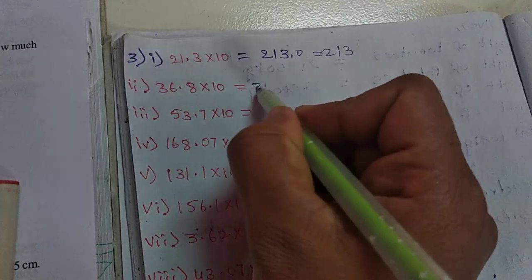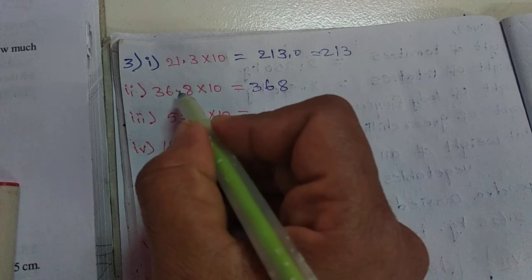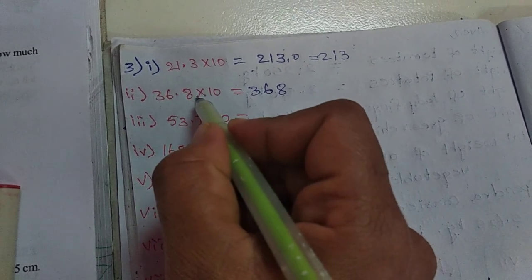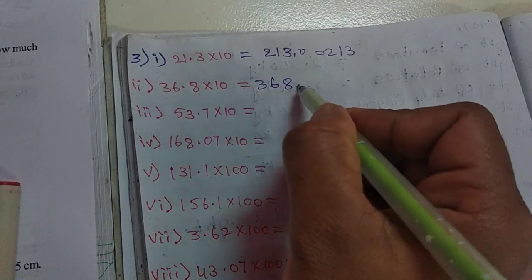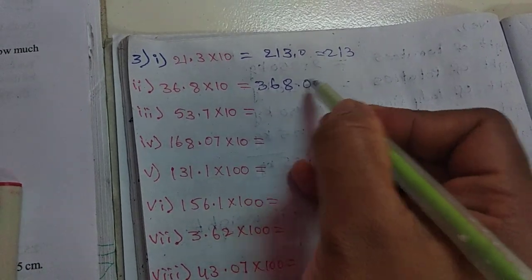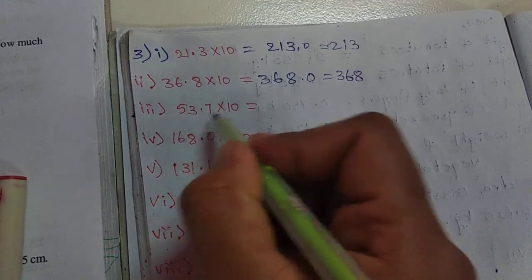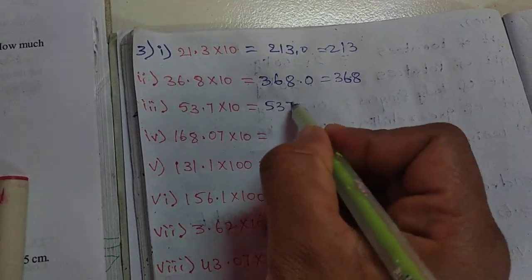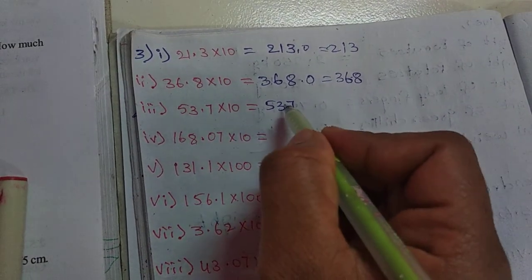Next, here also write that number as it is. When we multiply by 10, the point moves to the right side one digit because there's one zero. So the point moves here. Nothing but 213 is the answer for 21.3 into 10. Next, 36.8 into 10: same, the point moves here, so the answer is 368.